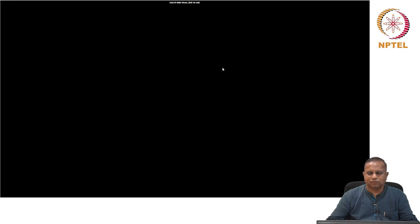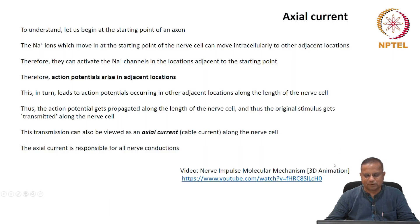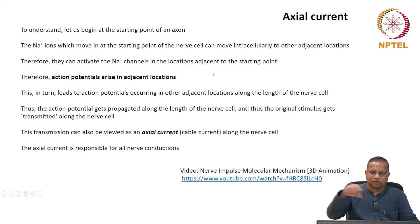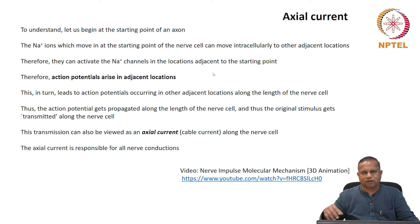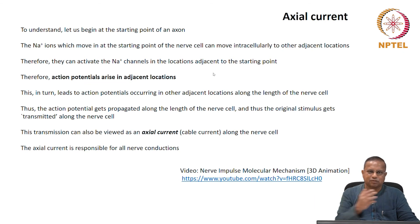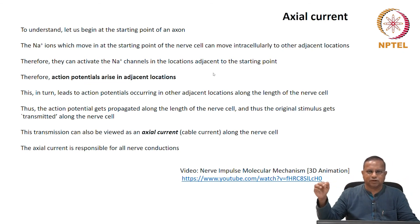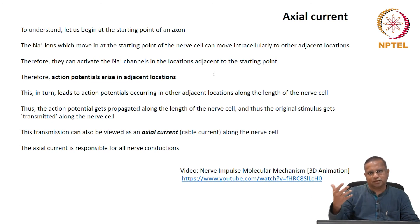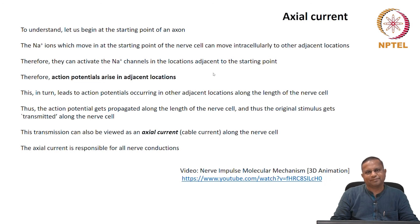That is what we have for this class. We looked at action potential at a point and a series of action potentials along the length of the axon, leading to an axial or cable current that is responsible for the conduction of impulses from sense organs to the brain, or from the brain to other parts of the body. See you in the next class. Bye.